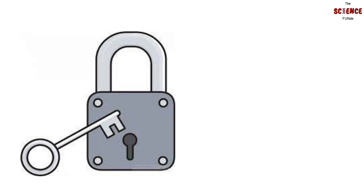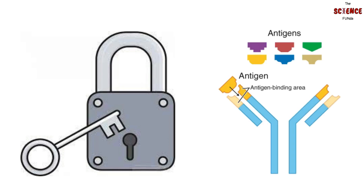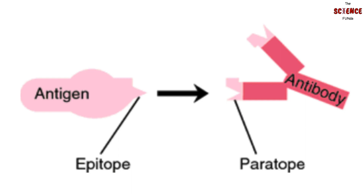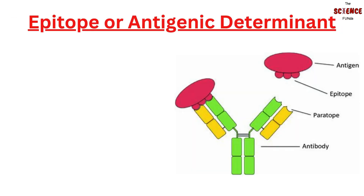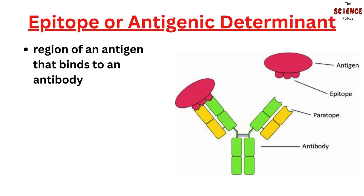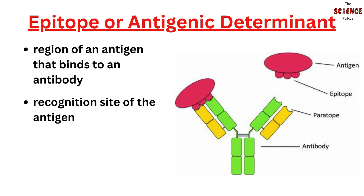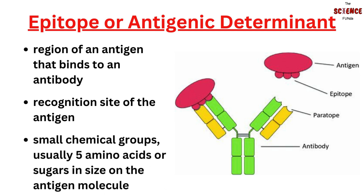Just like a lock requires a specific key, each antibody is capable of binding only to a specific antigen. Looking at this picture, an antigen binds to an antibody. You'll find that there is a region called an epitope lying on an antigen. Epitope is also called the antigenic determinant. Epitopes are small chemical groups, usually 5 amino acids or sugars in size on the antigen molecule, that can elicit and react with an antibody.